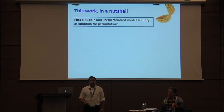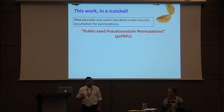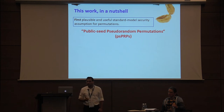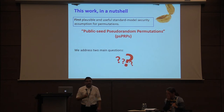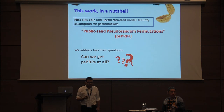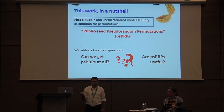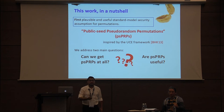So in this work, we propose the first plausible standard model security assumption that you can make on permutations, and show that this assumption is useful. More concretely, we give a new definitional framework called public seed pseudorandom permutations, or PSPRPs for short. We address two fundamental questions: first, can we have PSPRPs at all, and second, are they even useful? Note that our definitions are a conceptual contribution and can be adapted from the UCE framework for seeded hash functions.